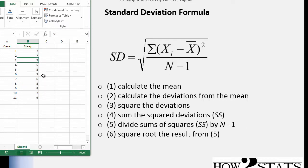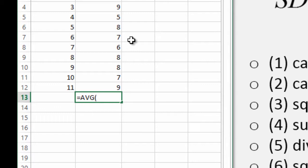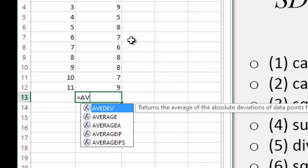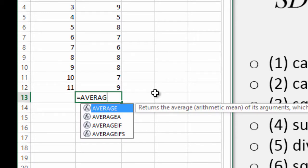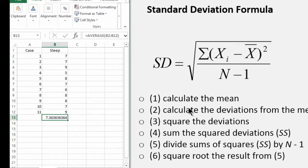Each case has a sleeping value. Some people reported 7, 9, 5, 7, 6. So first of all we need to calculate the mean. And we can get the mean by using the average function. Write b2 to b12 and we get the average of 7.36. So that's the first step done, calculate the mean. Excel does that with the average.